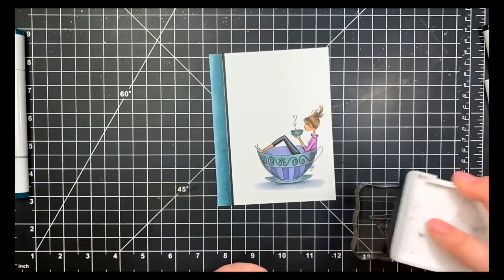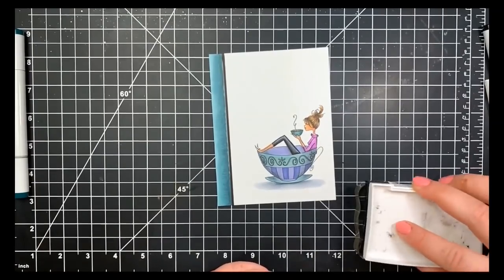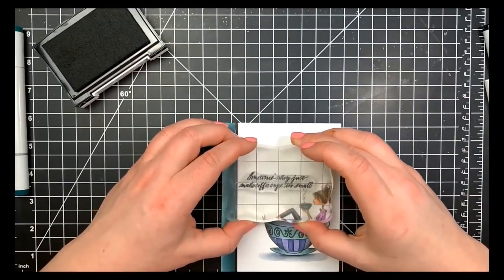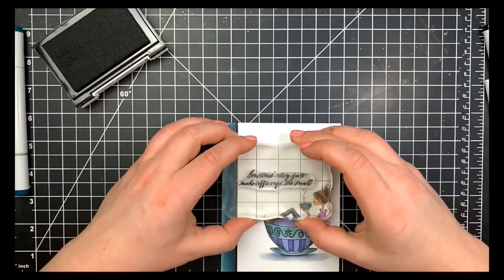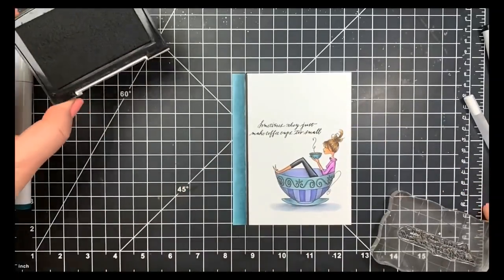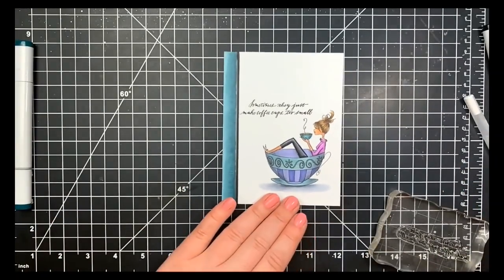And finally, I took my VersaFine Onyx Black ink as well as the sentiment from the stamp set and I just stamped that directly above her, more towards the left to kind of even things out a little bit. Once that was done, I adhered everything to an A2 size card base and that is the card for today guys. Thanks a lot for stopping by and have a great day. Bye!